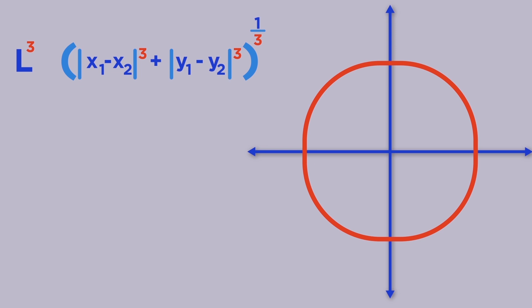There's nothing really special about the number 3. We can actually replace it with any number p that's greater than or equal to 1. Mathematicians call these Lp metrics, and they're used all the time.